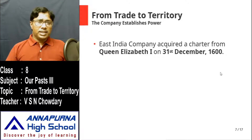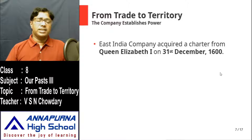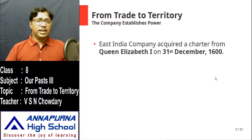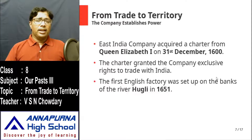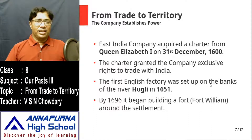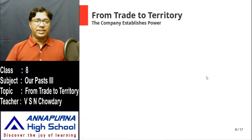The East India Company was given a charter by Queen Elizabeth the First on the 31st of December 1600. As per this charter, only the East India Company could trade with India — other companies in England could not do any trade with India. Then they set up a factory on the banks of River Hooghly in 1651, and by 1696 they began building a fort around this place, known as Fort William.